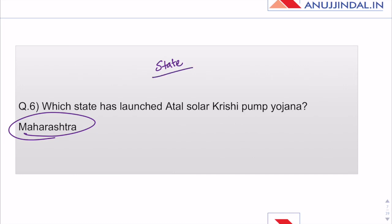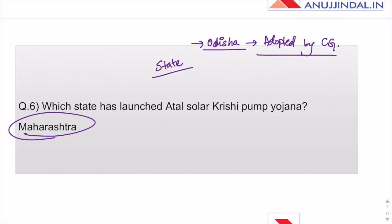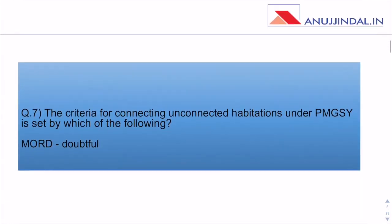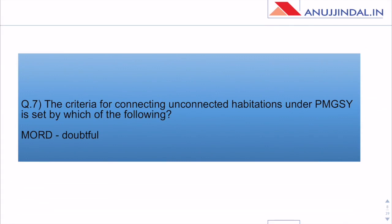Which state has launched Atal Solar Krishi Pump Yojana? The answer is Maharashtra. A lot of state schemes have been asked this year and are expected in Phase 2 also. Schemes by Odisha were popular and in news, and have also been asked in the exam — specifically those adopted by the central government. This particular scheme was awarded by an international organization, which is why it was asked.